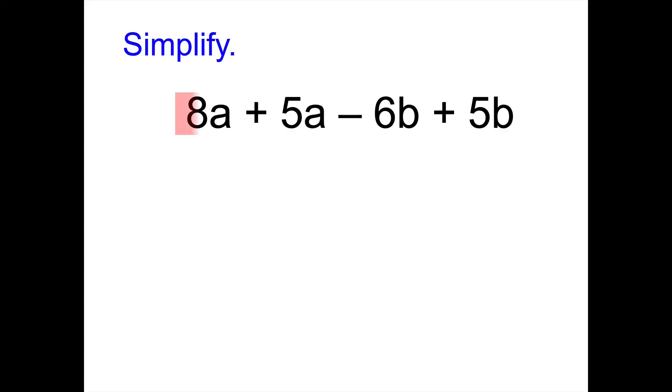Okay. And so I see 8a plus 5a for a grand total of 13a, and negative 6b plus 5b. And we're going to use our integer rules. Different signs subtract, take the sign of the larger. We end up with negative 1b, otherwise known as just negative b.